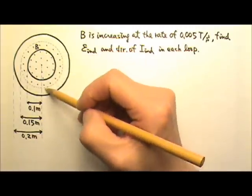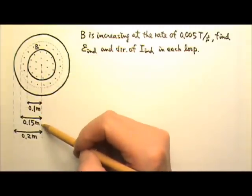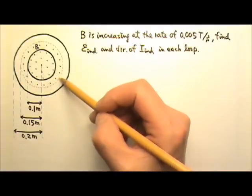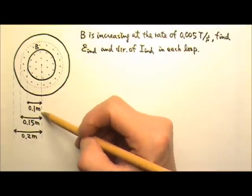There's a circular region of uniform magnetic field. The radius of this region is 0.15 meters. Concentric to this region of magnetic field are two circular conducting loops. The radius of the small loop is 0.1 meters.